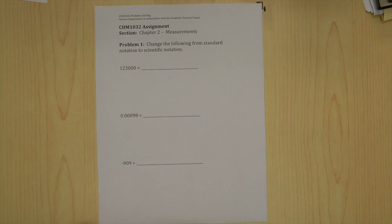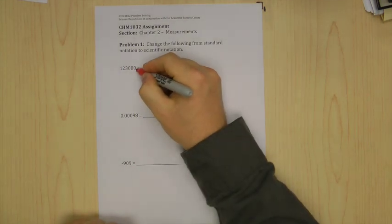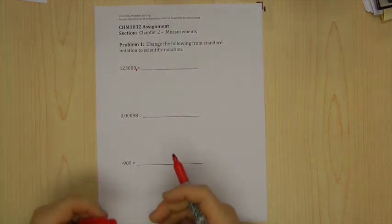Here we have 123,000. We want to modify that from standard notation to scientific notation. Now to do this, you basically have to imagine that there's a little bunny rabbit that's going to jump back and forth. I know that sounds a little odd, but let's imagine that at the end of this number there's a decimal point, and we're going to call that decimal point the little bunny rabbit.